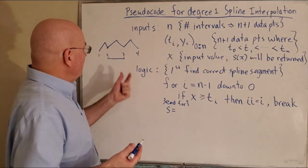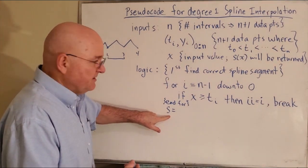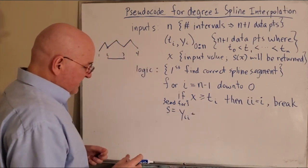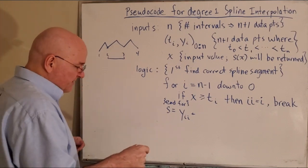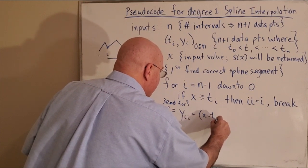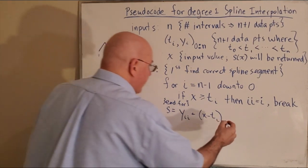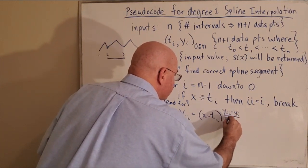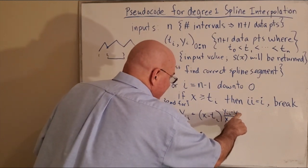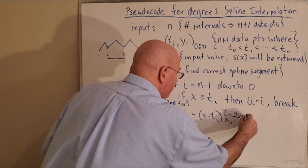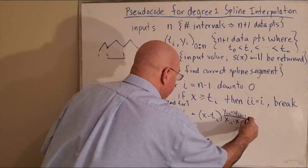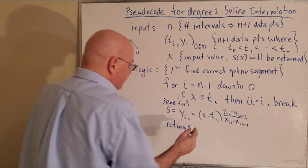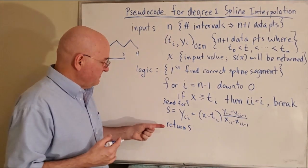Now we know which segment to use, so we compute and return s. Going back to the formula, s equals y_{ii} plus the slope times (x minus t_{ii}), where the slope is (y_{ii+1} minus y_{ii}) over (t_{ii+1} minus t_{ii-1}). That's the value you return — print out s.